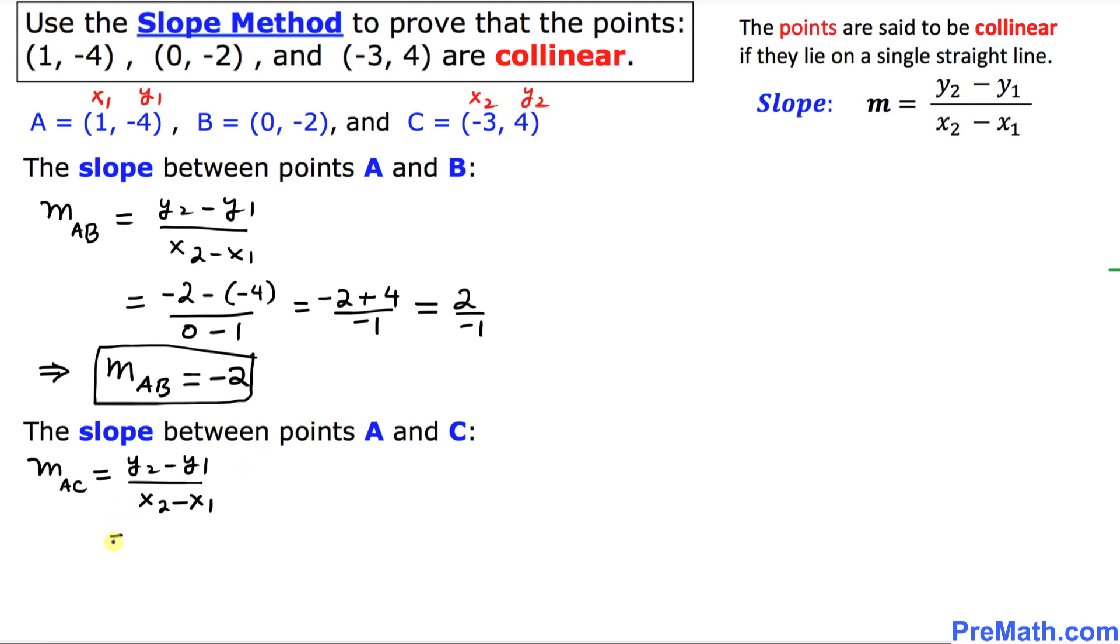So that is going to be equal to y2, in our case is 4, minus y1 is -4, divided by x2, in our case is -3, and then x1 minus x1.